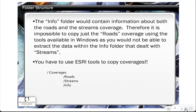The Info folder contains information about potentially multiple data layers. So within a folder structure, as seen in the diagram, we have a Roads layer and a Streams layer, and we also have an Info folder. The Roads folder contains information about roads, the Streams folder contains information about streams, and the Info folder contains information related to both of those different layers. This makes it almost impossible to copy a coverage using regular Windows Explorer — you really have to use the ESRI tools, more specifically ArcCatalog, to copy coverages from one location to another, which makes it kind of difficult to move this data around.